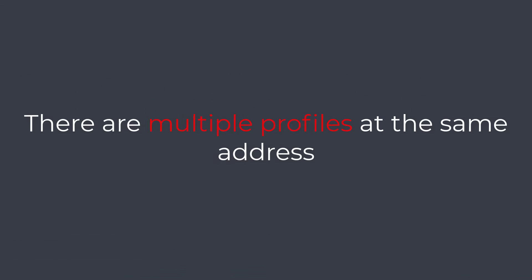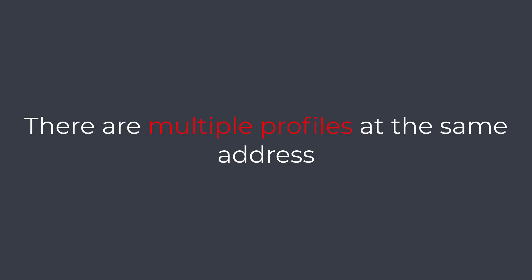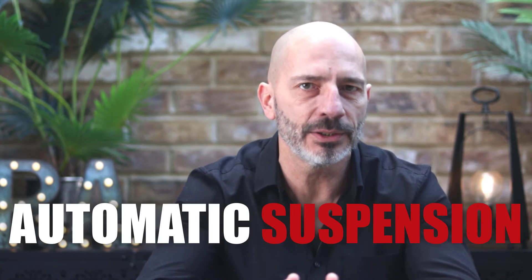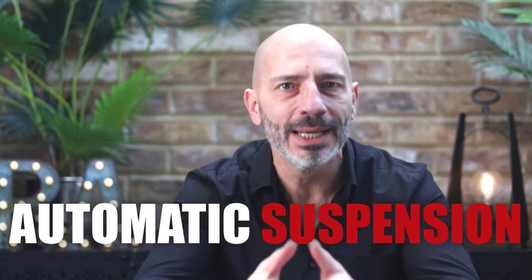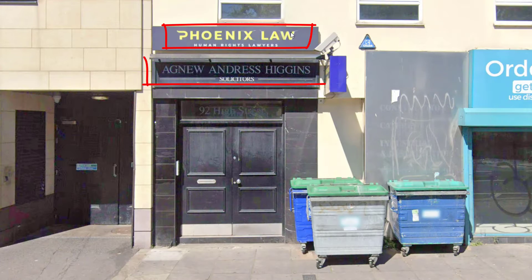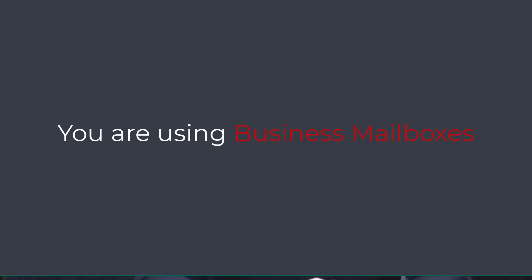There are multiple profiles at the same address. The presence of multiple profiles located at the same address can trigger automatic suspensions, especially if the businesses share similar activities — for example, several law firms working in the same building. This is quite common and can be solved by providing proof to Google that your business is legitimate and located at that address, which I'll cover in step two.